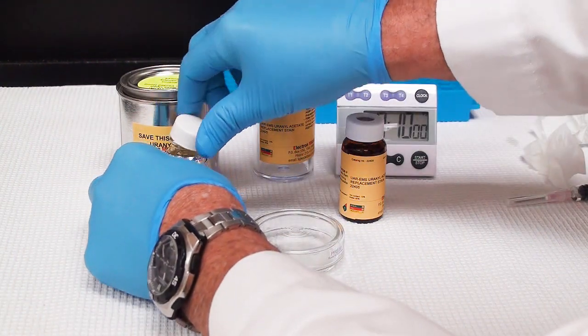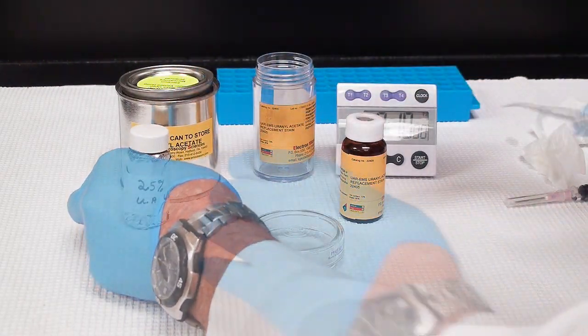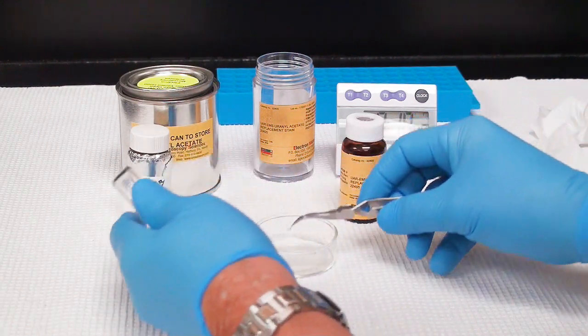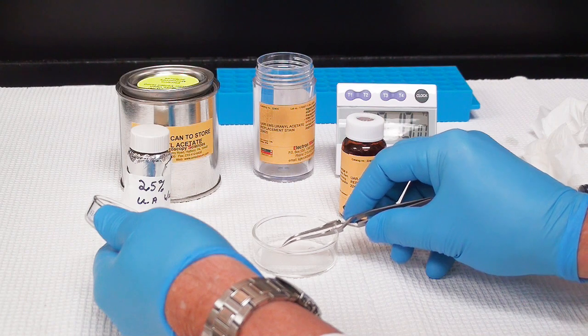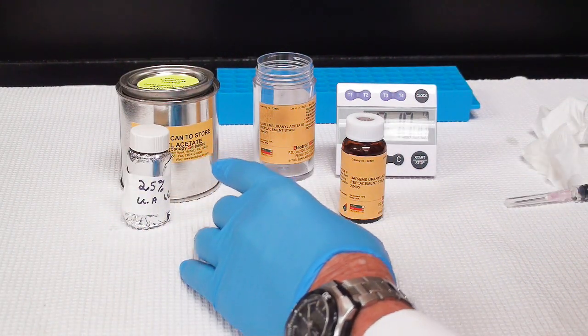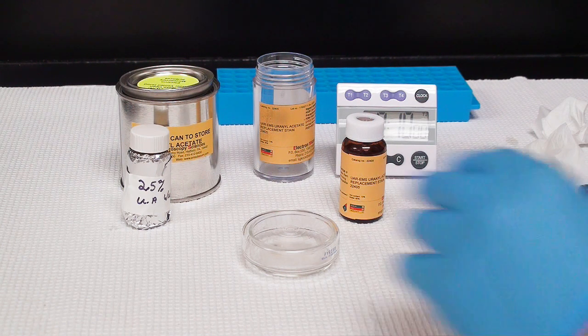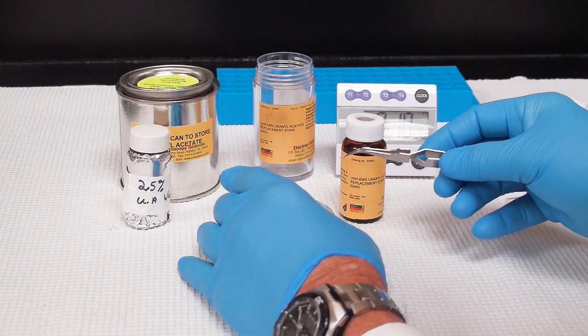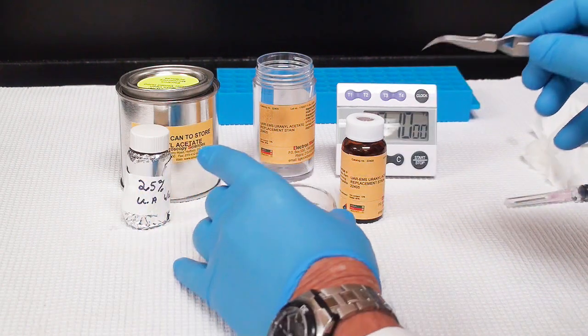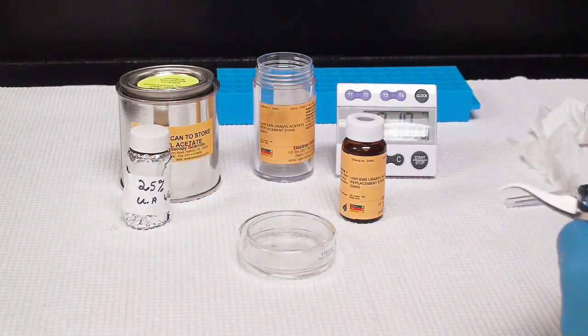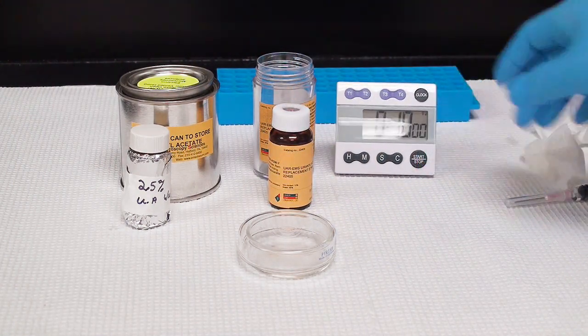I'll save that also for the microwave procedure which will be coming up. We're going to cover that, and then I'm going to do benchtop staining for 10 minutes. Many people use 7, some people use 20. I'll put my uranyl acetate grid on there, and then I'm going to put the uranyl less on the other side.